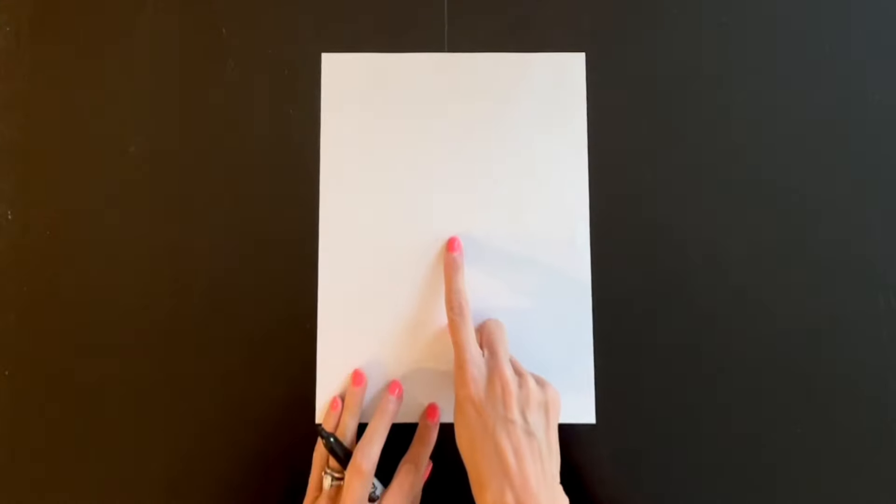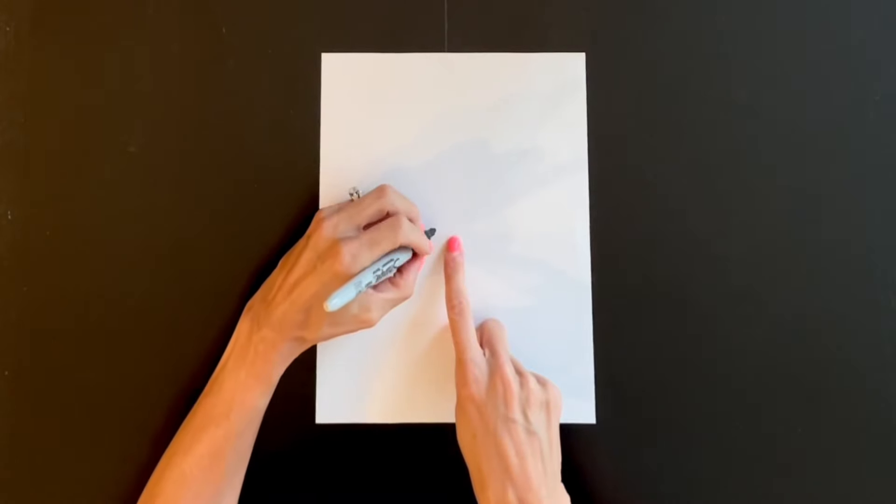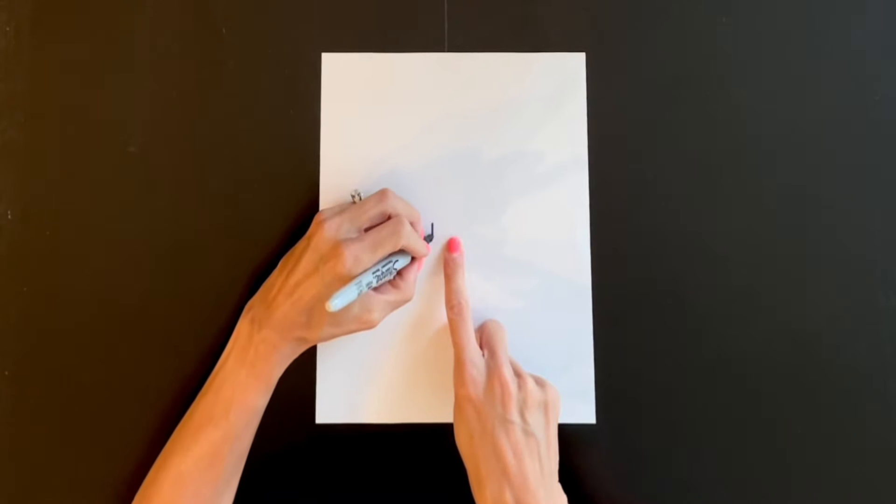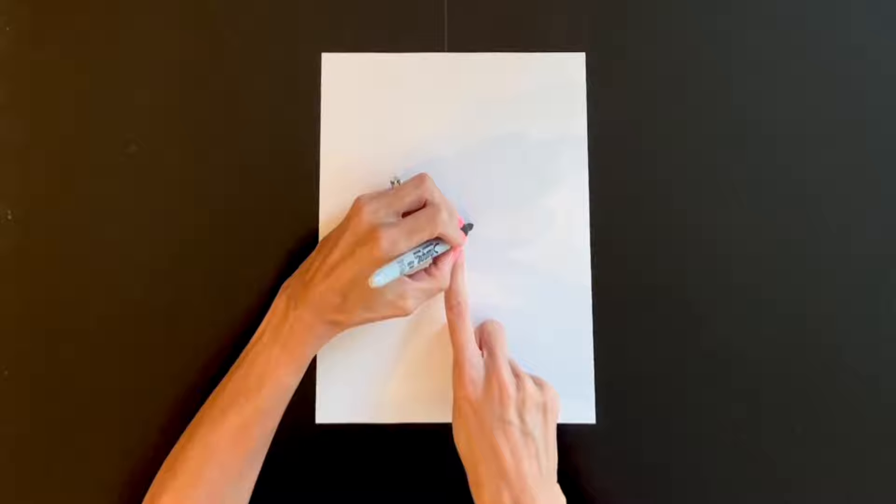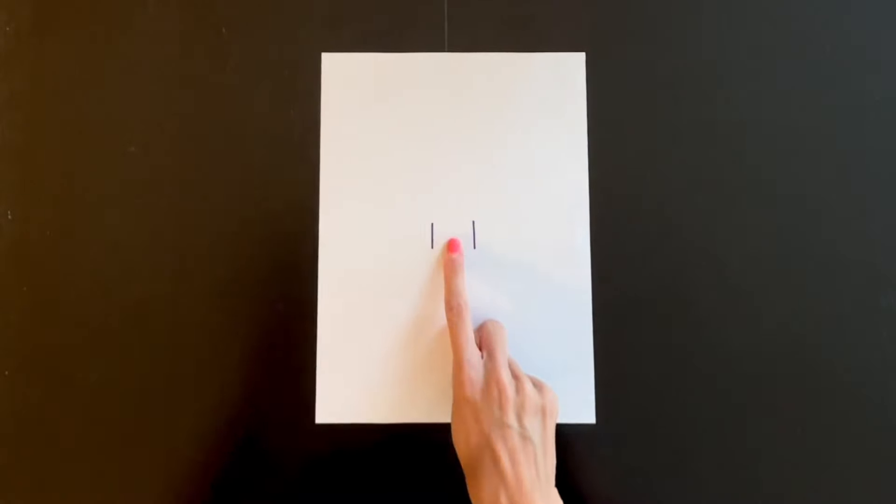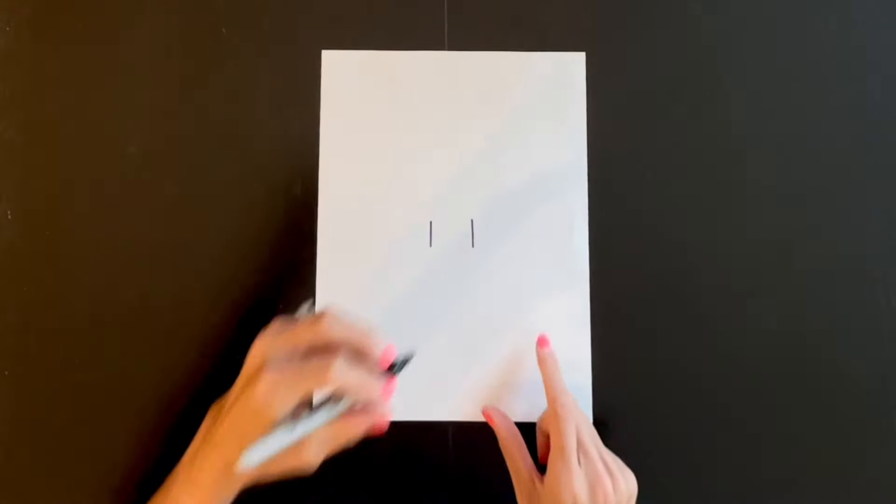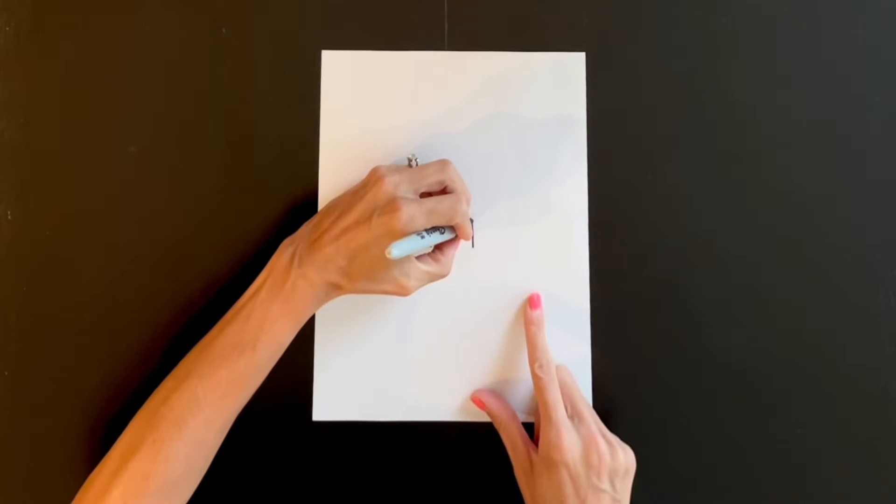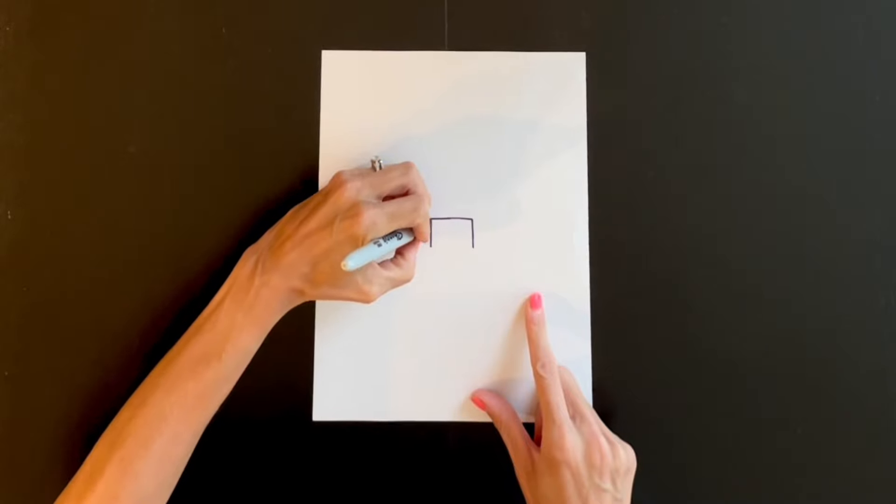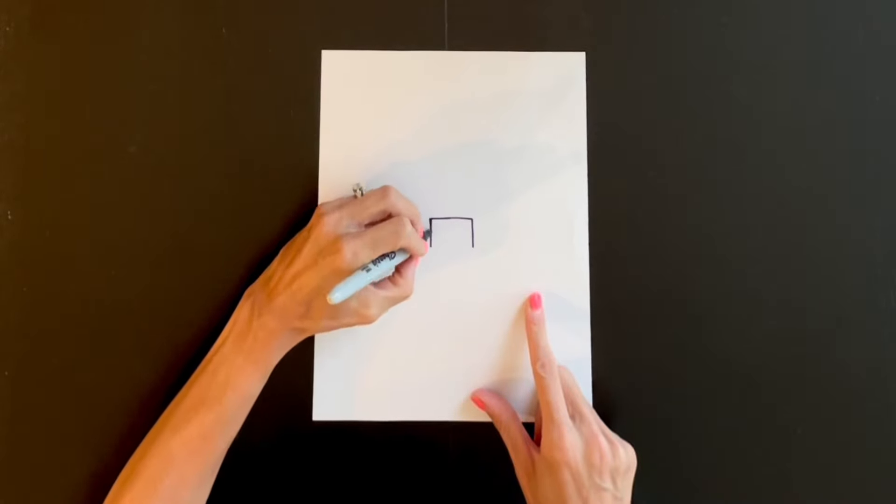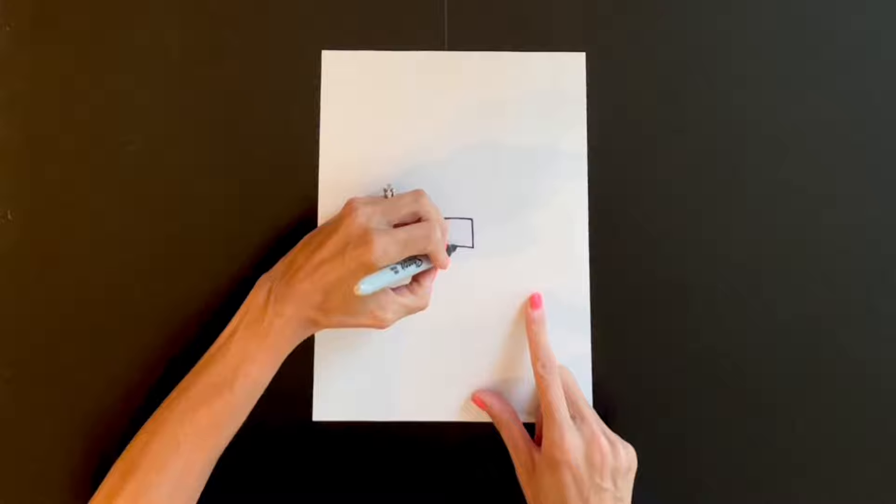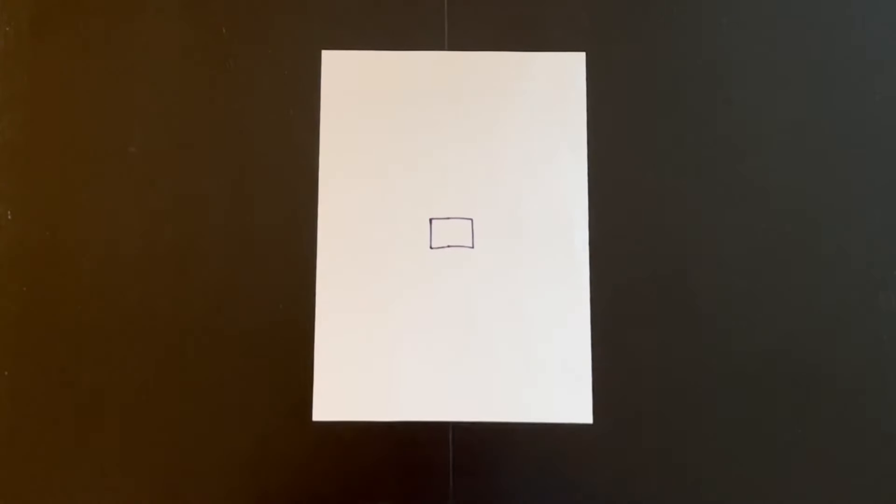All right, so the middle of our page is about right here and what I'm going to do is draw a line on each side of my finger and they should be about the same length. Then I'm going to connect them on the top and on the bottom to make a square.